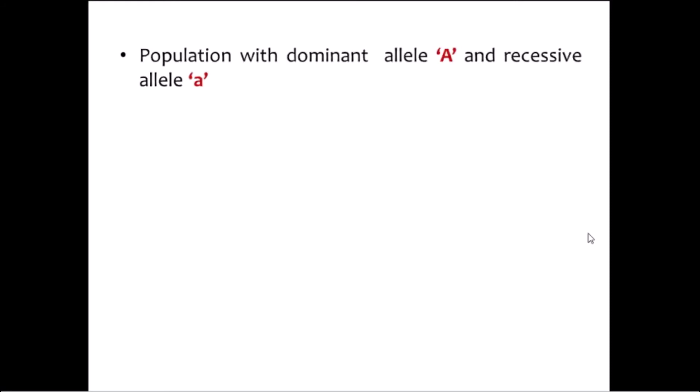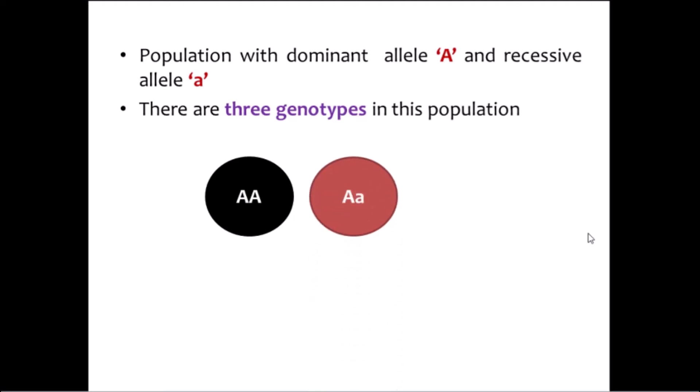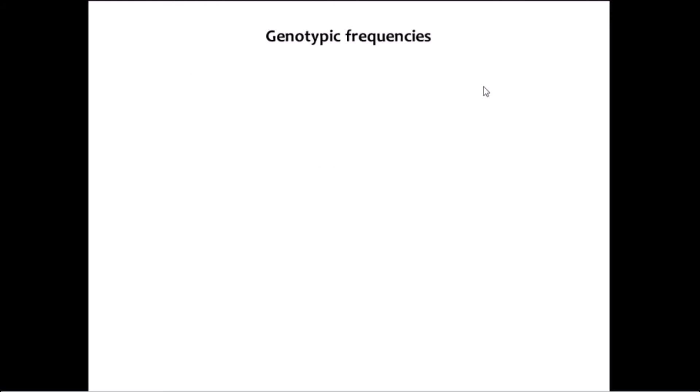In order to explain the second equation of Hardy-Weinberg equilibrium, let us reconsider the same population with dominant allele A and recessive allele a. Three genotypes are possible in this population: AA (homozygous dominant), Aa (heterozygotes), and aa (homozygous recessive). The first equation of Hardy-Weinberg equilibrium is for determining allelic frequencies of dominant and recessive alleles.